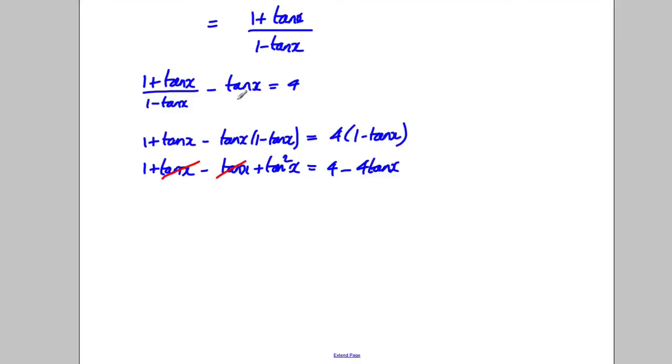Here these tan X's cancel and I can make this a quadratic with tan. I've got tan squared X here. If I add 4 tan X to both sides I get plus 4 tan X, and if I take away the 4 from both sides I get subtract 3 equals 0. I'm not able to factorize this so I'd use the quadratic formula.